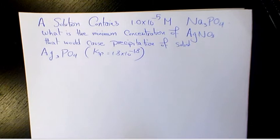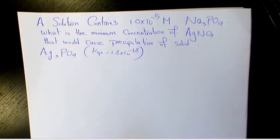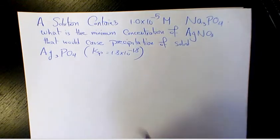What is the minimum concentration of AgNO3, which is silver nitrate, that would cause precipitation of solid Ag3PO4, which is silver phosphate? The Ksp for silver phosphate is 1.8 times 10 to the power of negative 18.